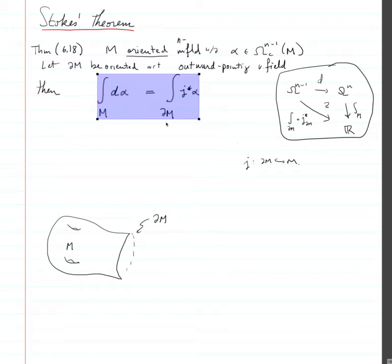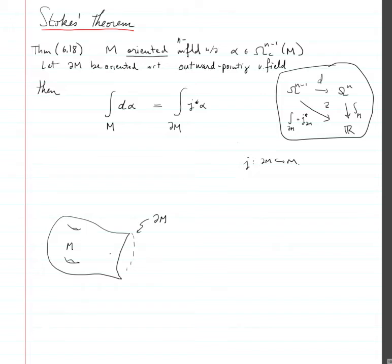So all I want to do here is to explain what this means. What it means is really that the tangent space to m at a point of the boundary has what we would call outward and inward pointing vectors.